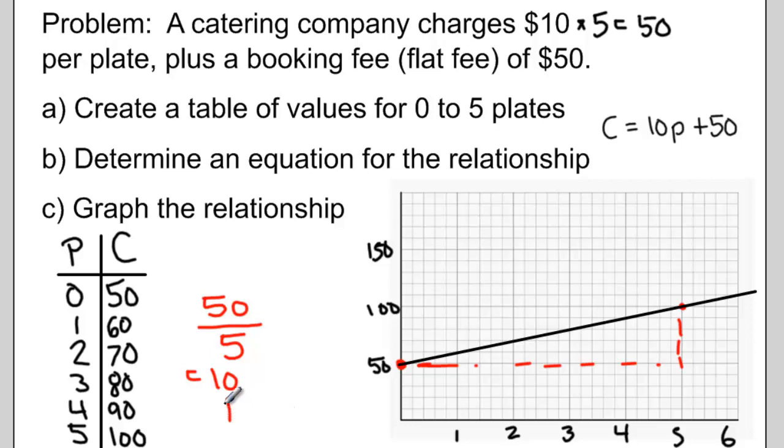And again, we see that number 10 represented in our equation. The number in front of the variable is our slope. This is an example of partial variation.